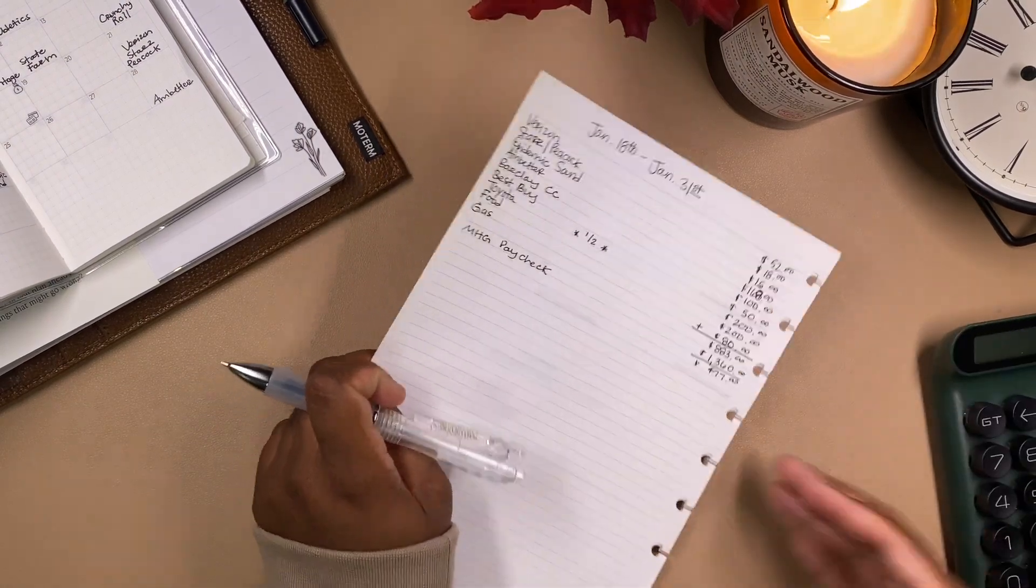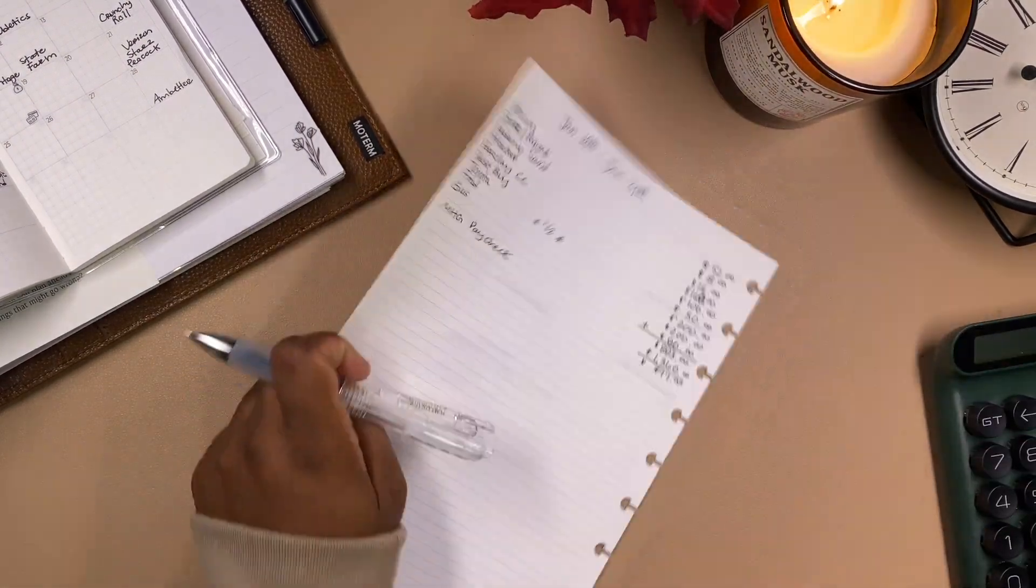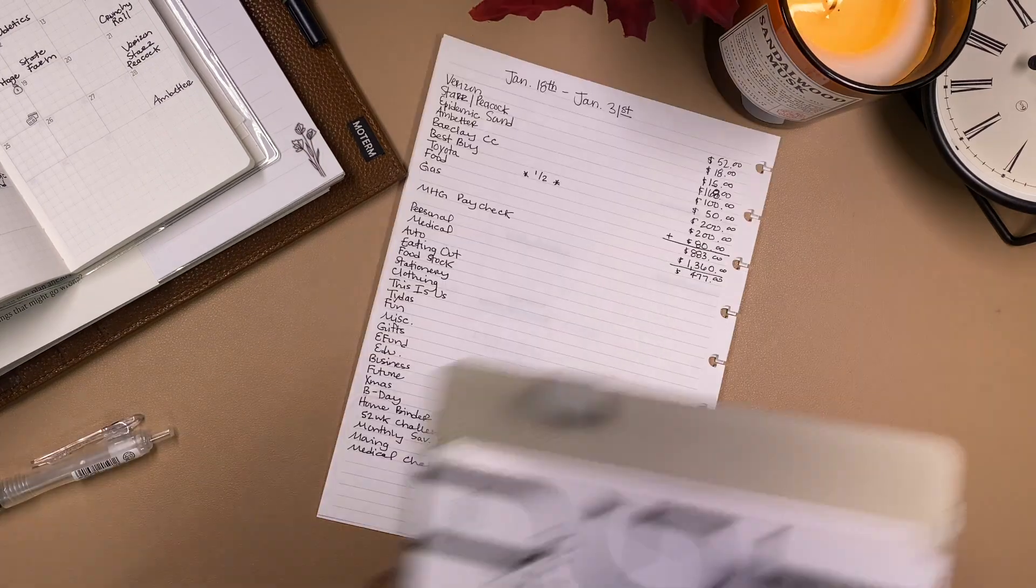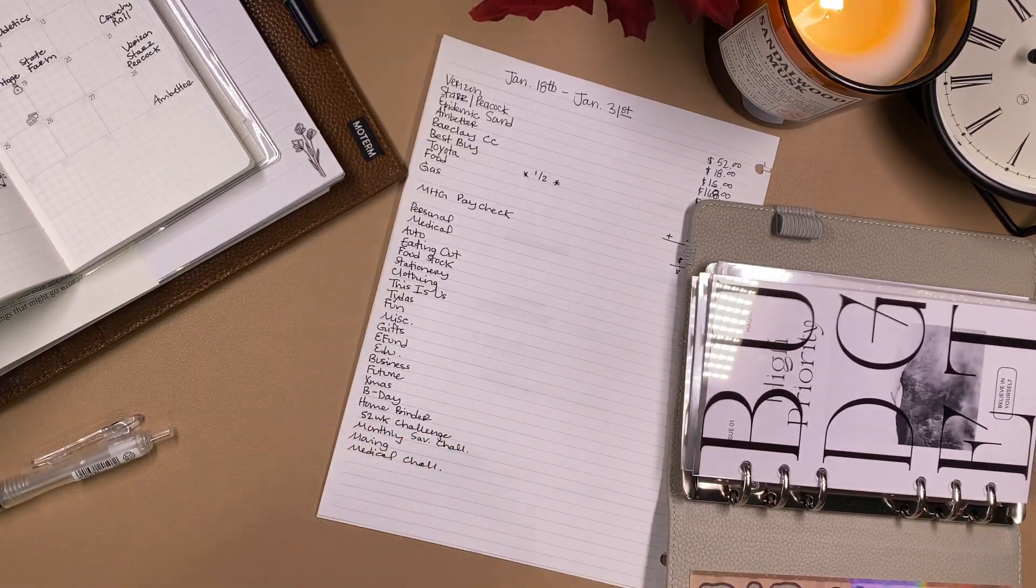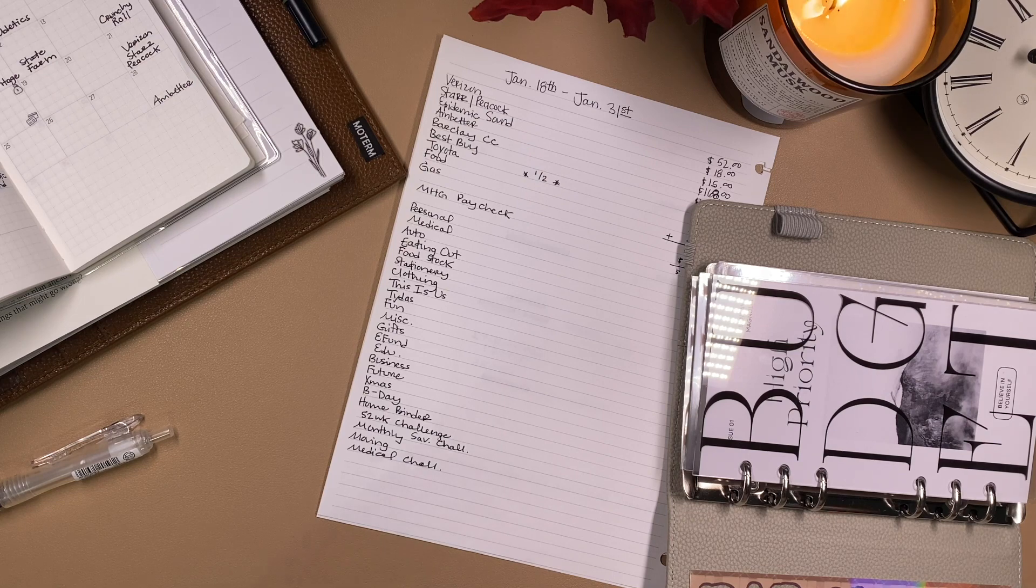Okay guys, I forgot to add in the fact that I save half of my car note. I'm so sorry. I knew I was gonna forget something. And I'll write half. And half is $200. So our total is $883 for bills total. And so my paycheck is $1,360, is that... that's about how much it is. So minus $1,360... that's $477. That is all we have to cash stuff this time around.